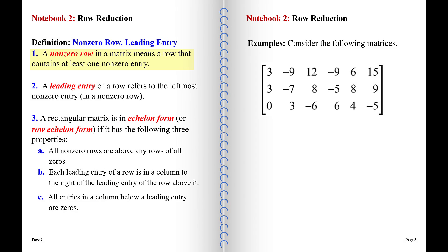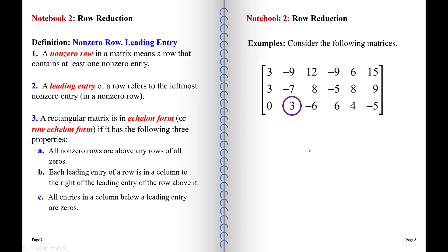First we have some definitions. A non-zero row in a matrix is simply a row that is not all zeros — namely a row that does not consist of all zeros. A leading entry in a non-zero row is the leftmost entry in that row. In the first row, the entry in the one-one position is the leading entry. In row three, the leading entry is in the three-two position, the number three. Since we have three non-zero rows, we have three leading entries.